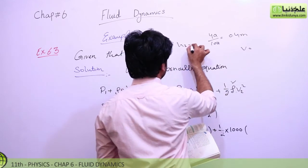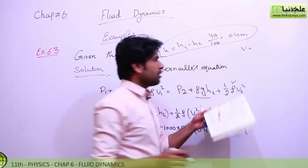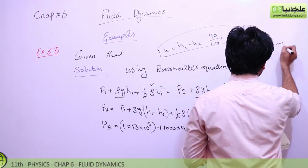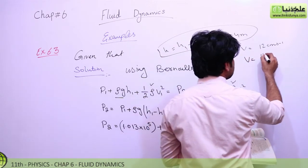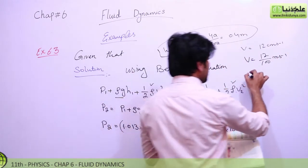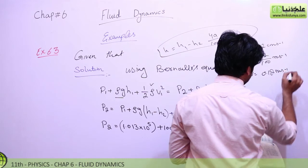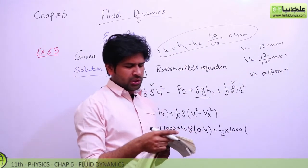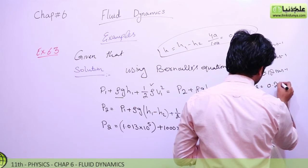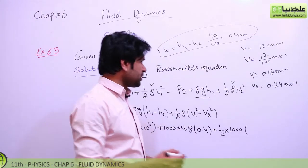For the velocities: v1 at the top is 12 centimeters per second. Converting to meters per second by dividing by 100 gives v1 = 0.12 meter per second. Since the velocity at the bottom is twice the top, v2 = 2 × 0.12 = 0.24 meter per second. We now substitute these values into the rearranged Bernoulli equation.